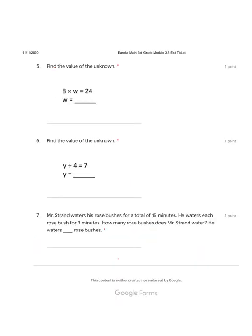Our next problem, find the value of the unknown. What is our unknown in this problem? 8 times W equals 24. We do not know what W stands for, so that is our unknown. And we are trying to figure out, what does W equal? What is the value of W?